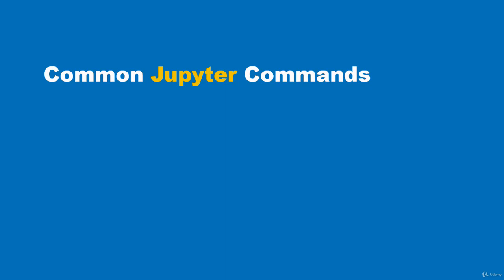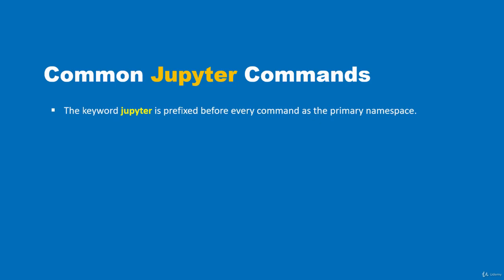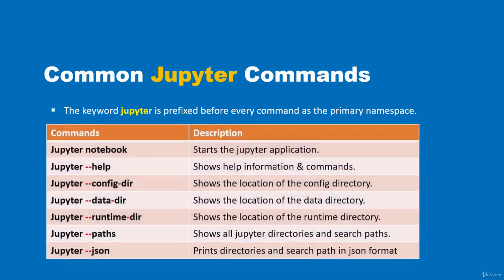In this video I'll show you some common and useful Jupyter commands. All Jupyter commands are prefixed with the keyword 'jupyter' before the subcommands. The 'jupyter' keyword is the primary namespace for all subcommands. Let's look at a table of common Jupyter commands. The first command is to start Jupyter Notebook: type 'jupyter notebook'.